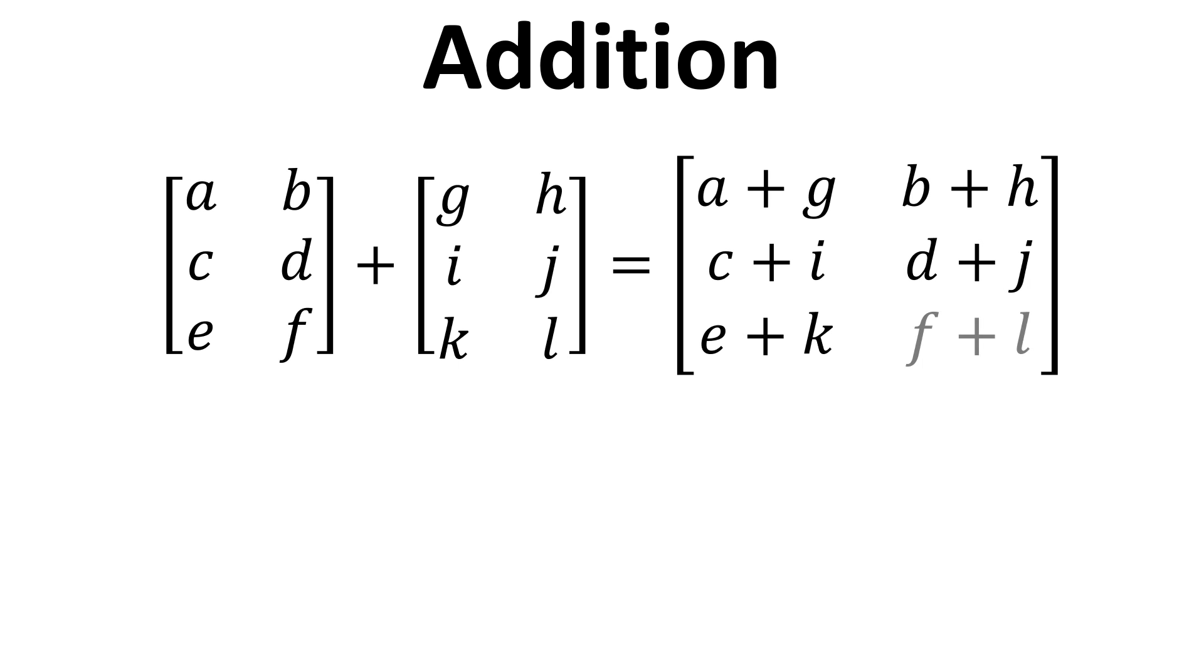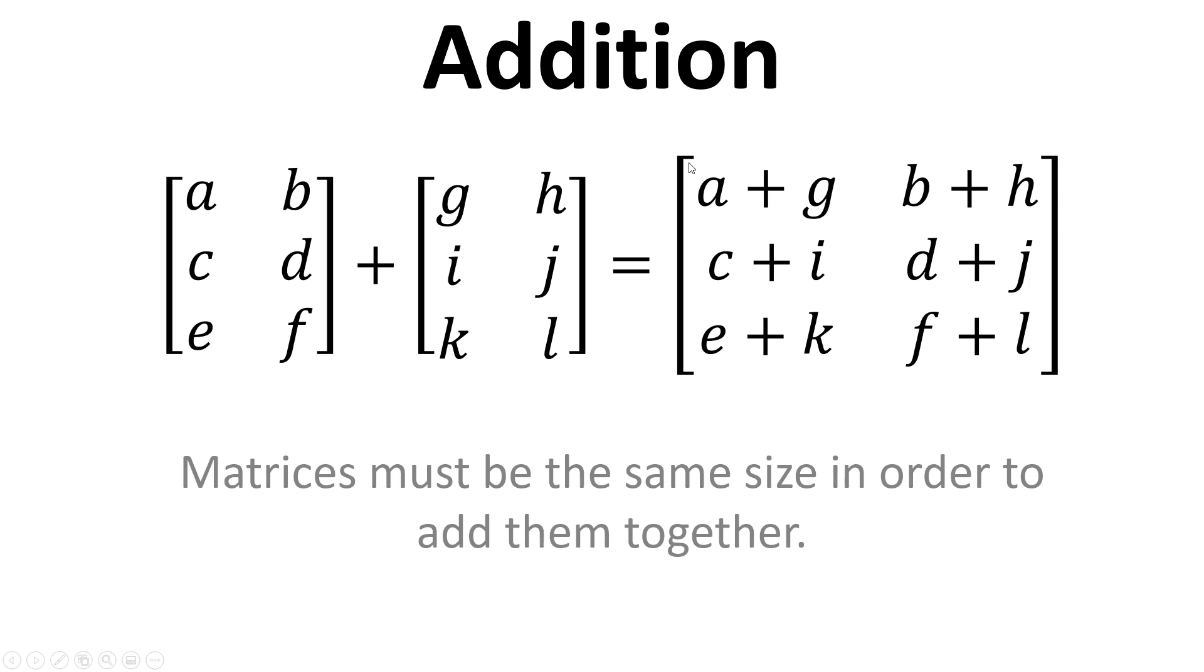We're taking the first element in row 1, column 1, and adding it to the element in row 1, column 1 over here, and that provides us with the entry for our answer matrix. Again, they must be of the same size in order to add them together.